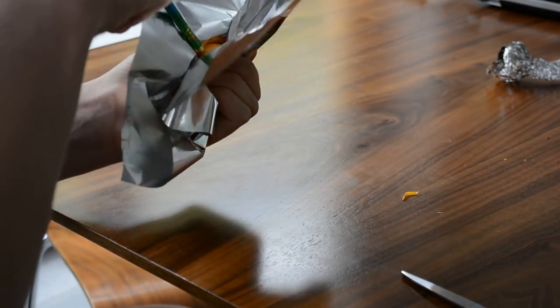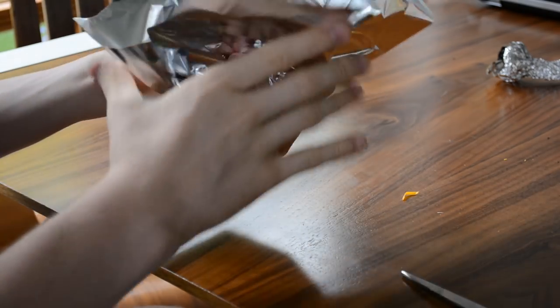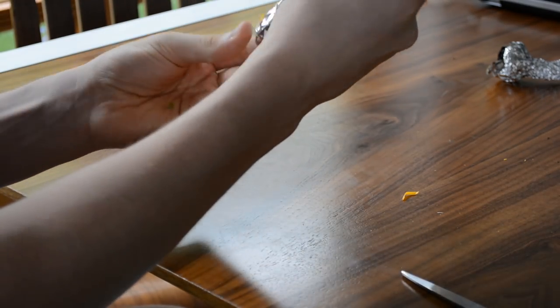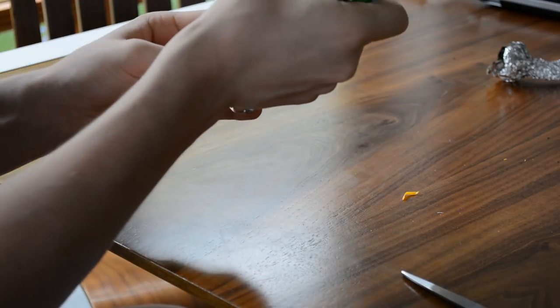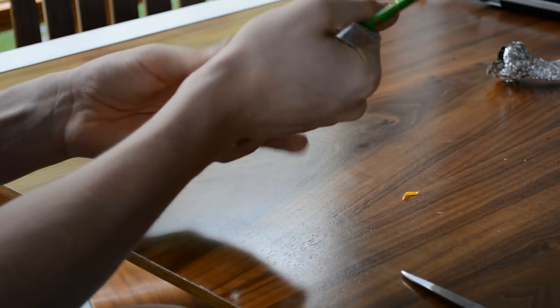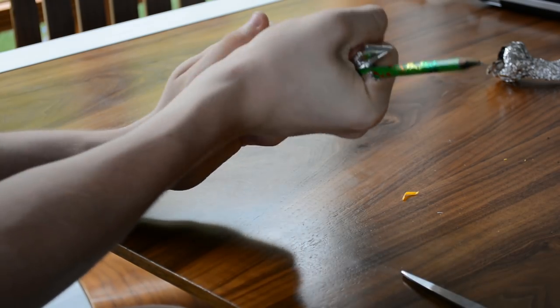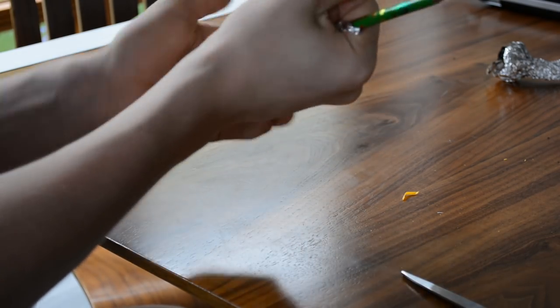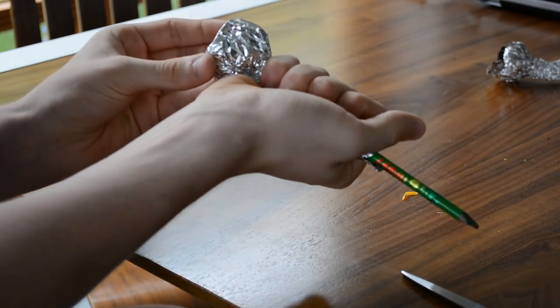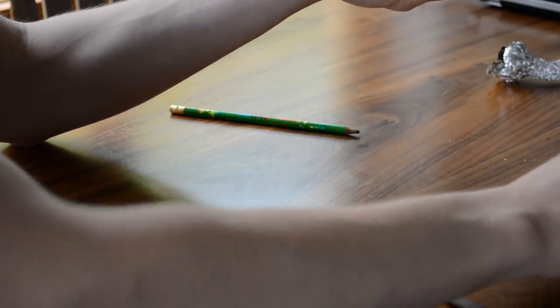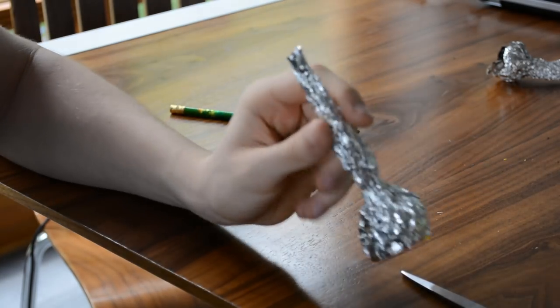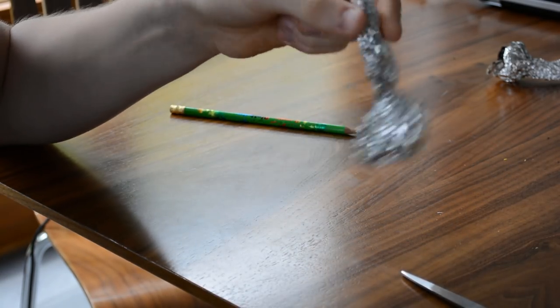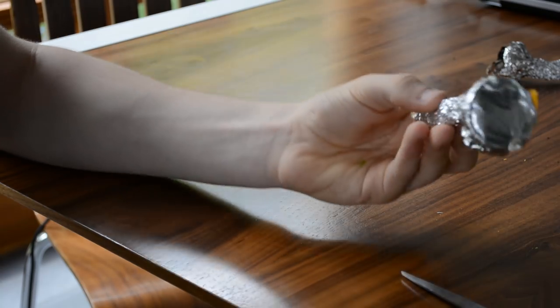Take your pencil and start wrapping the foil around the pencil. I'll show you in a second how this looks at the end. So tight. Alright. Nothing has to be perfect here. That's the beauty. As you can see, this is how it should look. It should look like, I don't know, a bell.